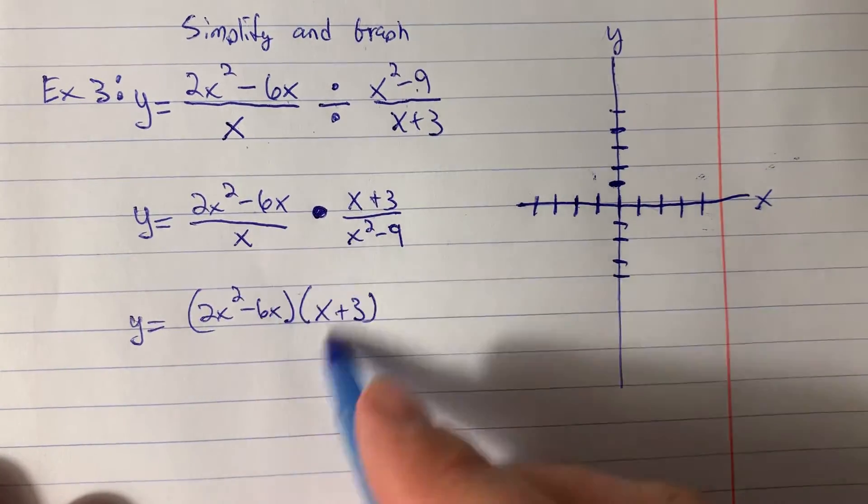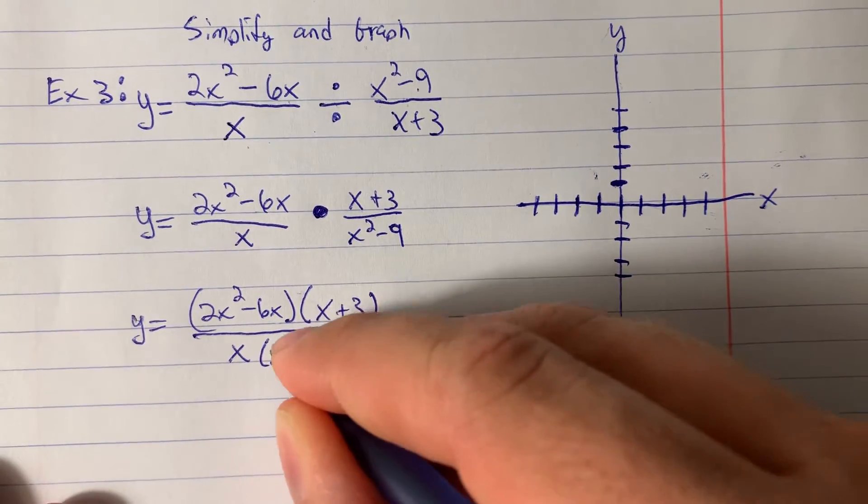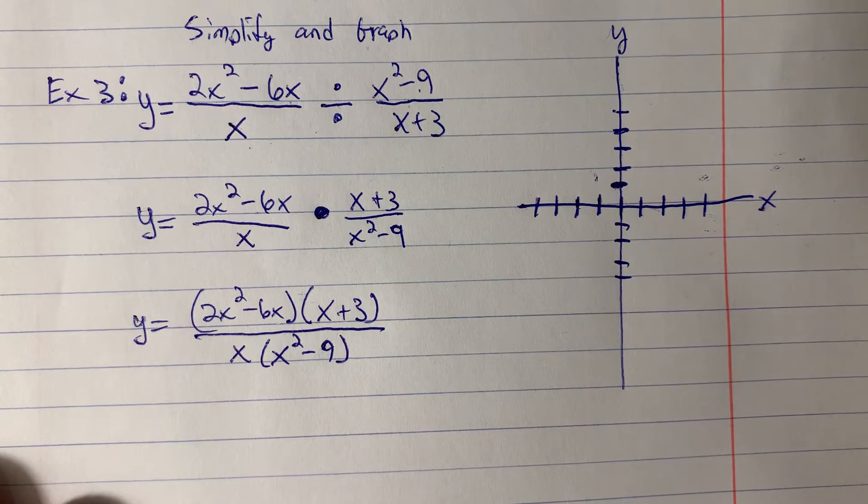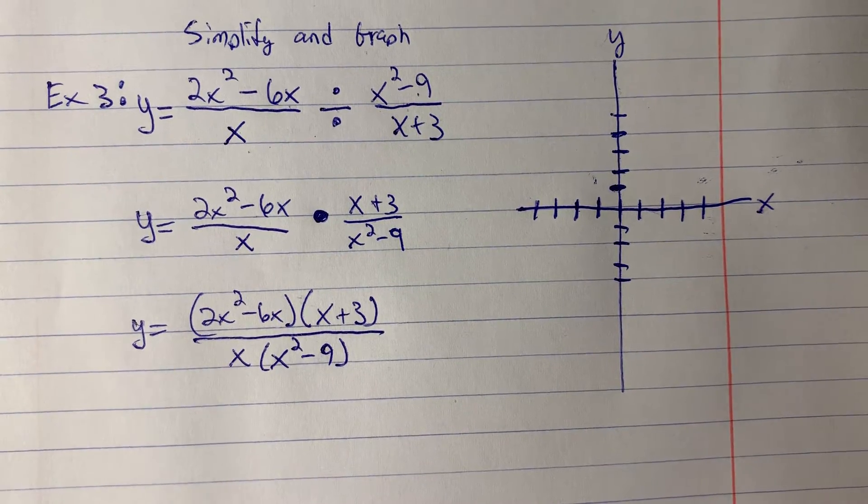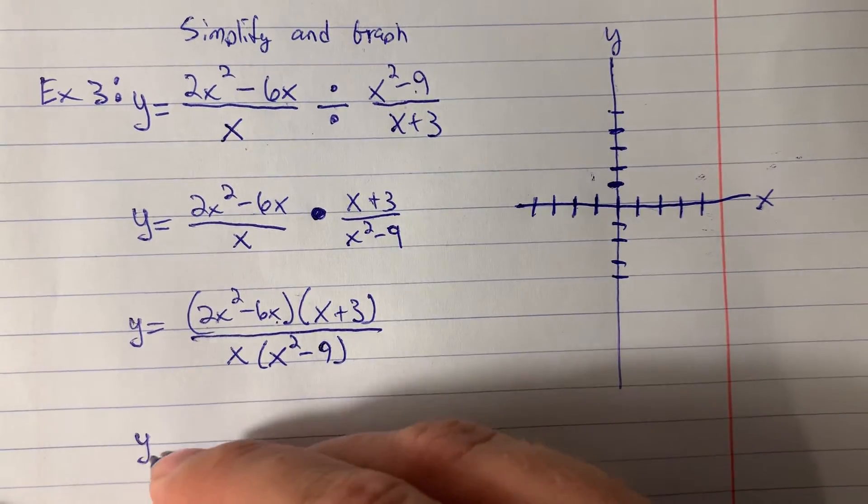So we multiply the numerators together, and we multiply the denominators together. And we're going to use the same trick we used in multiplying to simplify this, which is we want to factor everything. I notice in the numerator that these have a common factor of 2x.